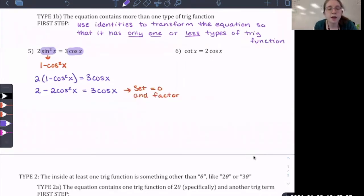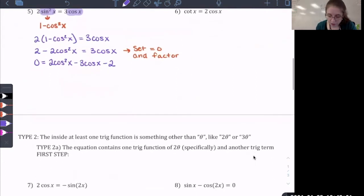I noticed that my squared term is currently negative, the negative 2 cosine squared x. So I'm going to move all the terms over to the right side to keep my squared term positive. So I'm going to say 2 cosine squared x minus 3 cosine x minus 2. And I wrote them in that order so that it was in standard form, the squared, the linear, and then the constant term.